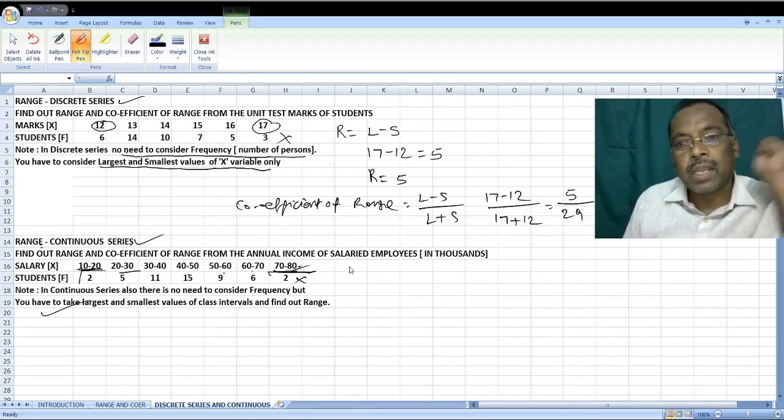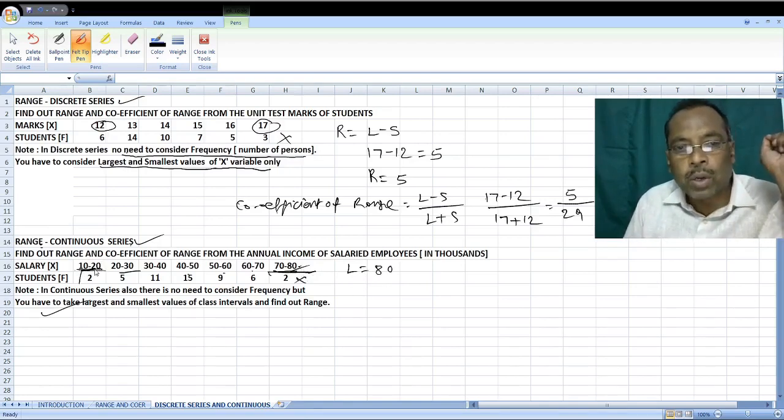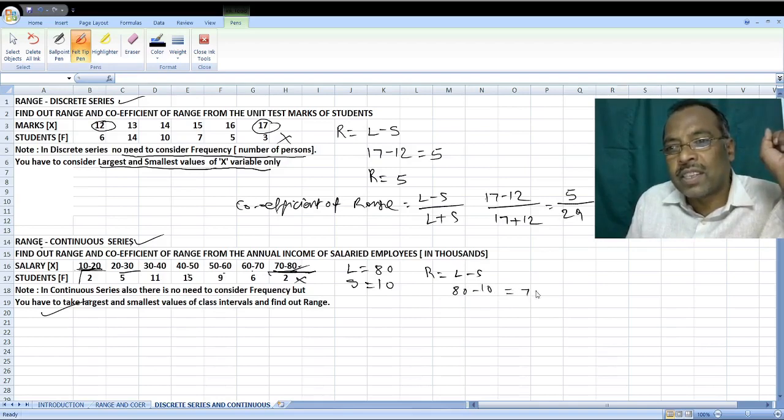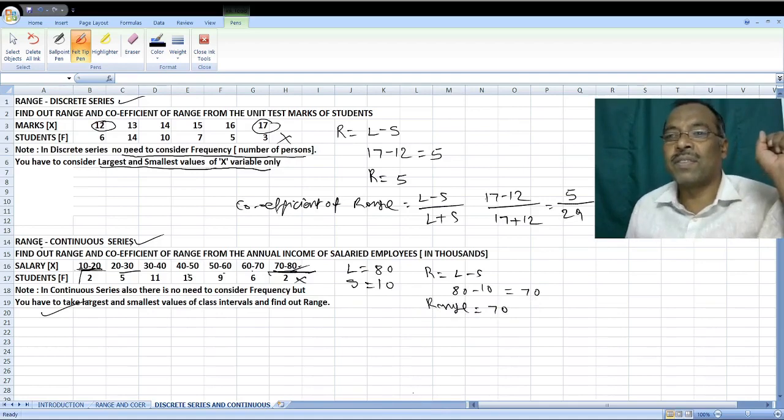So here, L is equal to 80, Largest Value. And in 10 to 20, what is the smallest value in the Class Interval? Smallest value is equal to 10. Now, what is the formula for range? R is equal to L minus S. So, 80 minus 10 is equal to 70. Range is equal to 70. That's all.